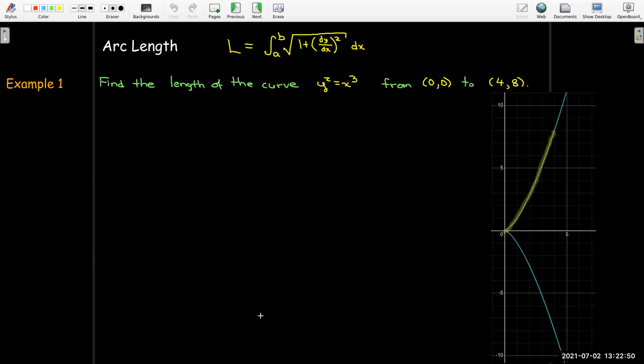So let's use this formula to calculate the length of the curve y squared equals x cubed from the point (0,0) to (4,8). So this blue curve is showing us what this particular curve looks like and the shaded part or the highlighted part is the length that we're trying to calculate.